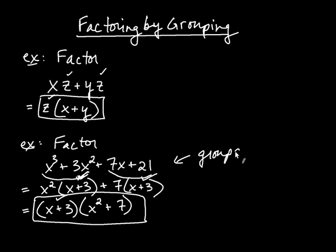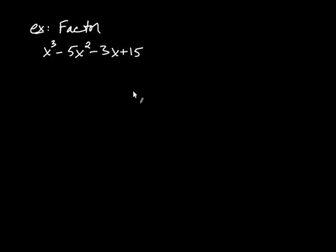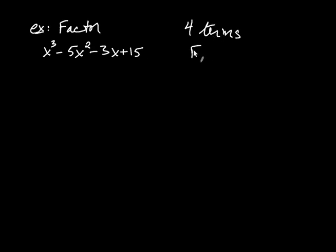Even though the initial grouping step is not the final answer, it still gives you one more step to do. That grouping process helped us factor the same way as before, except the difference is we factored out a binomial, not simply a monomial. Let's try another one. Let's factor x cubed minus 5x squared minus 3x plus 15. I ask myself: what do they all have in common? And the answer is there is no greatest common factor I can factor out. When you see four terms, a nice strategy we often use is factoring by grouping.